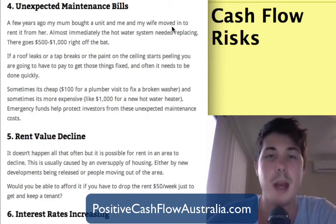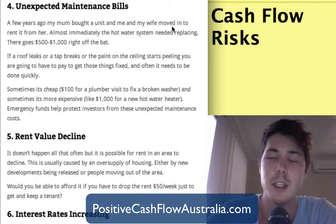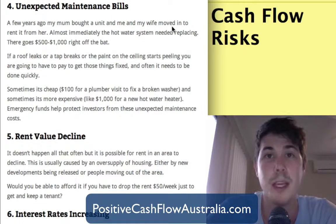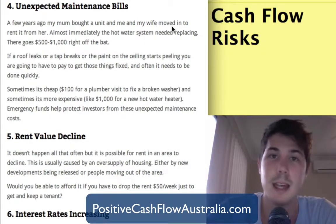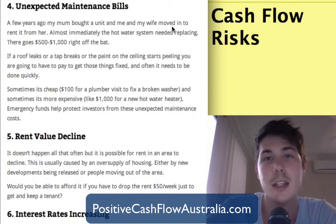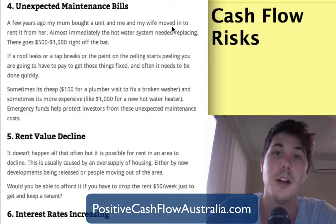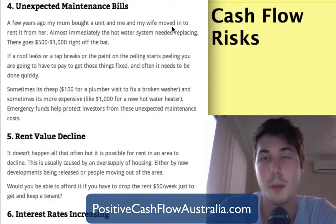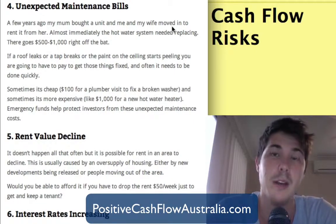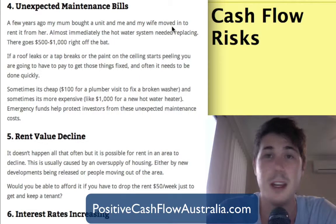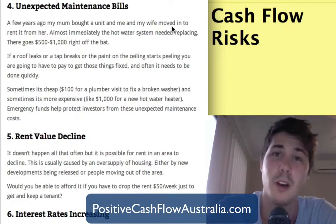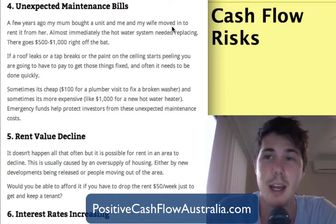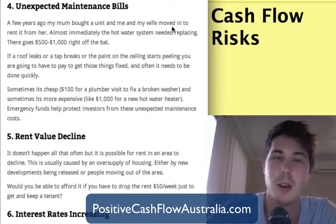Number four is unexpected maintenance bills. My mom had purchased an investment property unit, and as soon as we moved in — basically within a week or two — the hot water system broke, costing $500 to $1,000 to replace. She later bought another property, and the exact same thing happened again: the hot water system was already busted, costing another $500 to $1,000. There are always going to be unexpected maintenance bills, so you need to take those sorts of things into account.